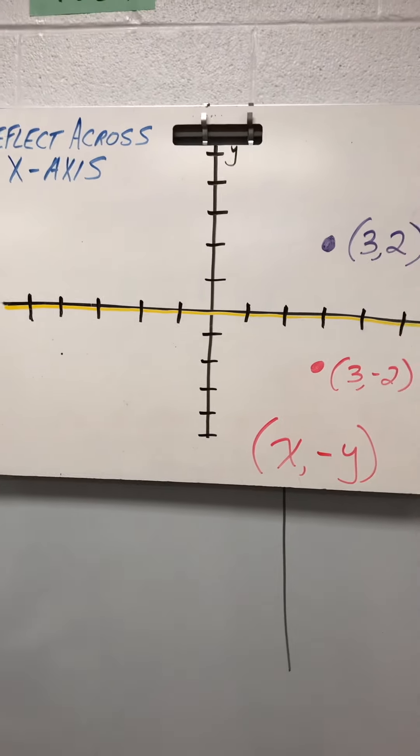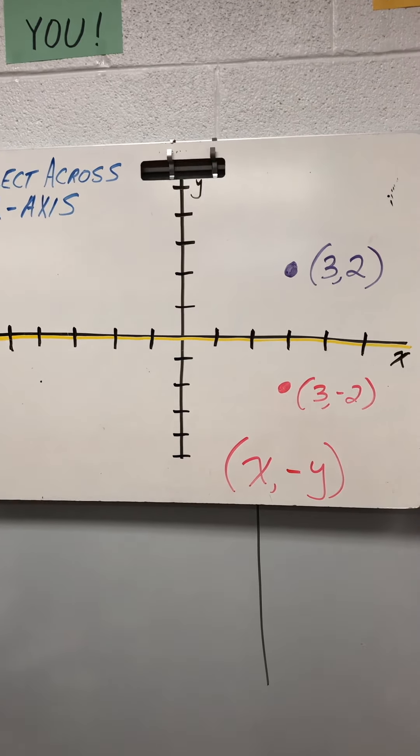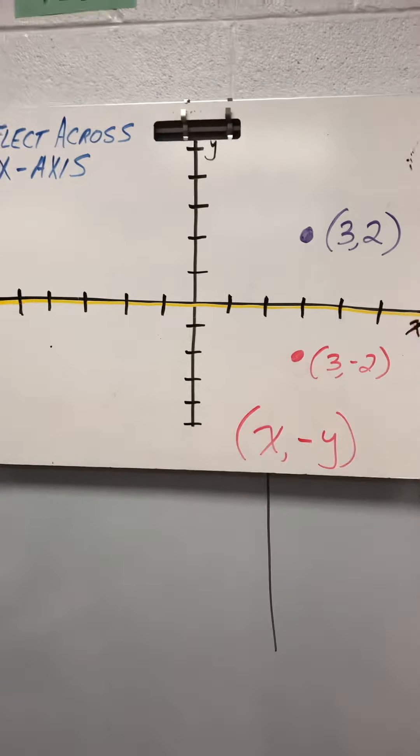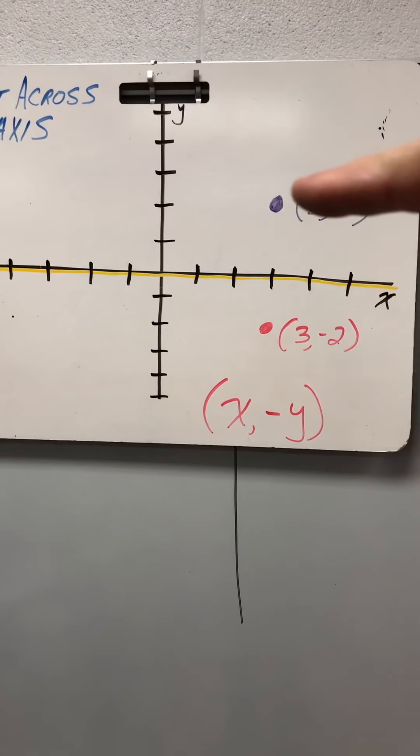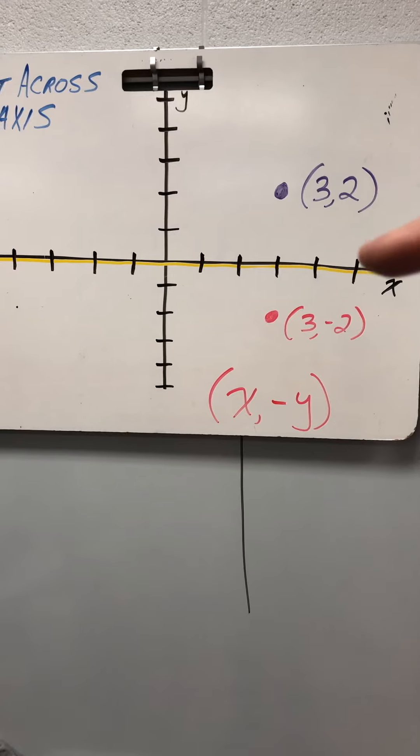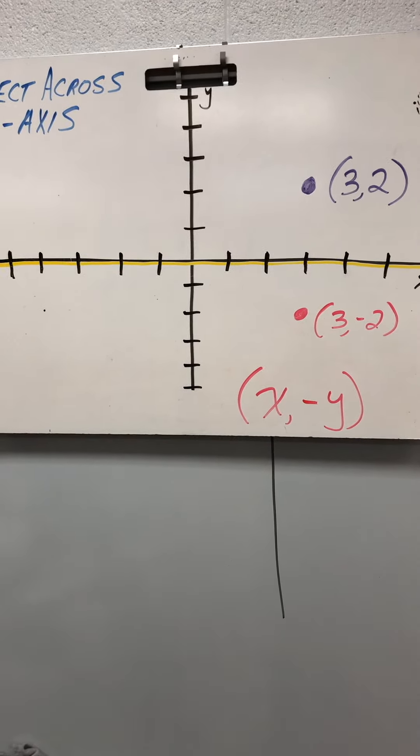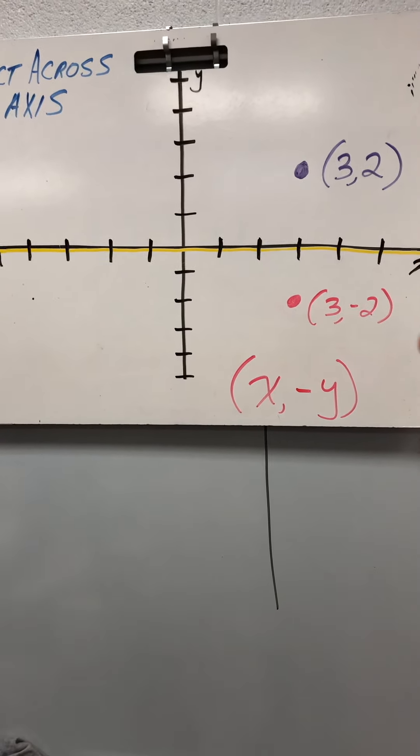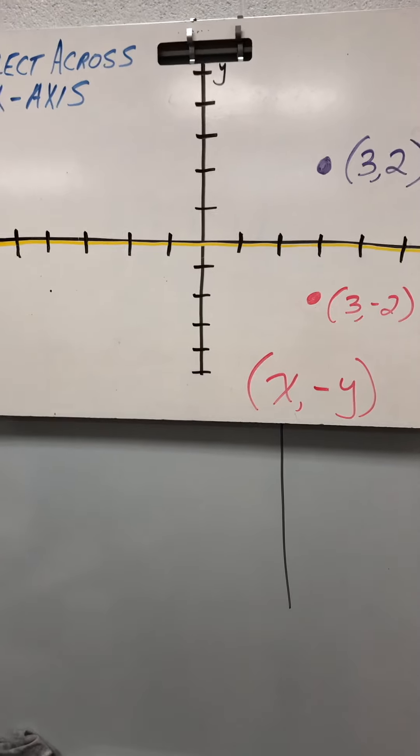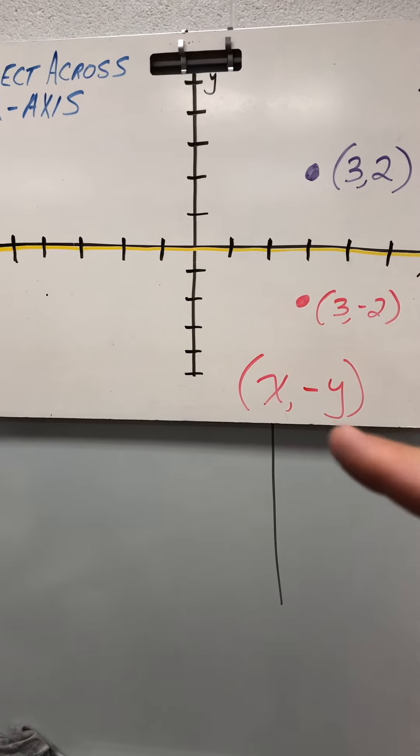Reflections, okay? So to reflect across the x-axis, all right, if the original point is 3, 2, okay, here's the x-axis, the new point is 3, negative 2. So the reflection is 2 below if the original is 2 above. So what is that? That's going to be x, negative y.